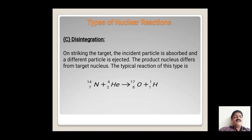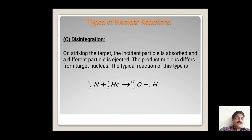In this reaction, when helium is incident on nitrogen, the product is oxygen with mass number 17 and atomic number 8, along with hydrogen. Different elements are observed in the product. Such types of nuclear reactions are known as the disintegration type of nuclear reaction.